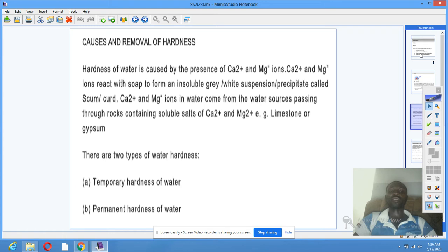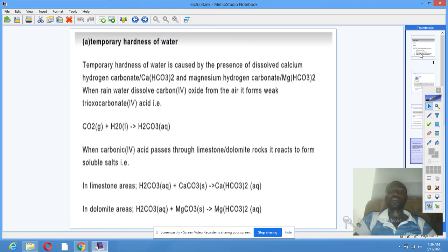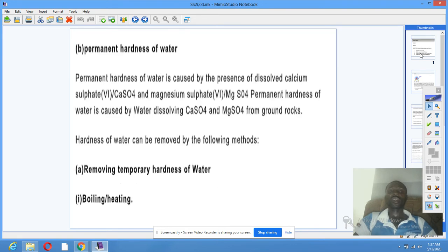One, temporary hardness, and two, permanent hardness. Temporary hardness of water is caused as a result of the presence of calcium 2+ and magnesium 2+ hydrogen carbonate ions. Permanent hardness of water is caused as a result of the presence of calcium 2+ and magnesium 2+ sulfate ions.